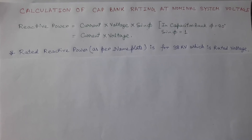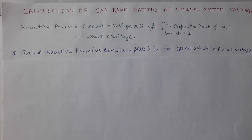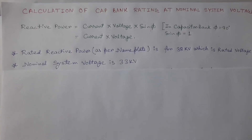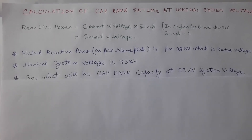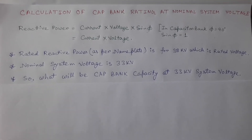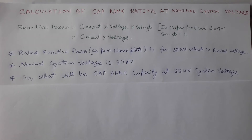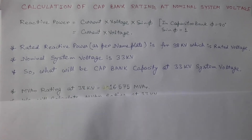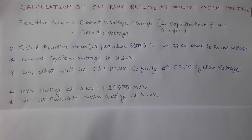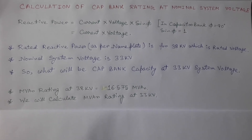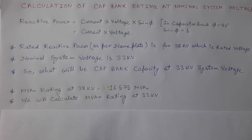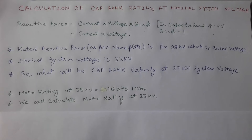As per the nameplate, reactive power data is provided for 38 kV, but our nominal system voltage is 33 kV. So what will be the capacitor bank capacity at 33 kV system voltage? In this example, the reactive power is 16.575 mVar at 38 kV, and we have to calculate the mVar rating for 33 kV system voltage.